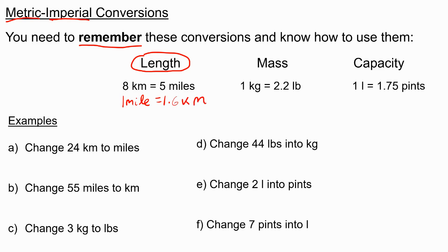We need to know that 1 kilogram is 2.2 pounds. Remember for pounds, we use the abbreviation LBS or LB, which is just an abbreviation of the Latin word Libra, which means pounds. And finally, capacity: we need to know that 1 liter is 1.75 pints.